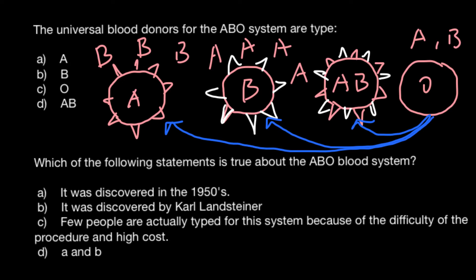So as you can see, people who belong to blood group O are universal donors — and this is answer C.